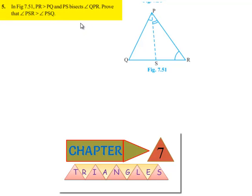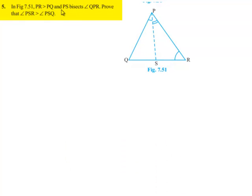Now moving on to the fifth question. In figure 7.51, PR is greater than PQ and PS bisects angle QPR. Prove that angle PSR is greater than angle PSQ.